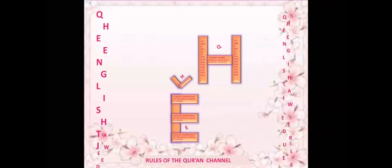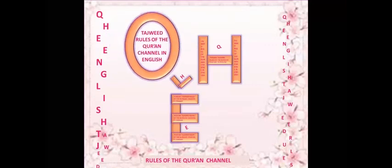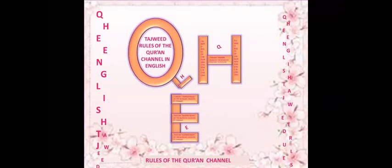With this, our lesson for today is done. Today's lesson was about Al-Ikhfa' al-Shafawi in Meme rules: if I find Meme Saakina followed by Ba in two words, I make hiding for the Meme at the Ba and keep the Gunna of the Meme during the Gunna length. It's a very easy lesson, inshallah it will be clear for you. Jazakum Allahu khairan for watching QHE Tajweed Rules of the Quran Channel in English. Next time inshallah we will take the third rule of Meme Saakina. Assalamu alaikum wa rahmatullahi.